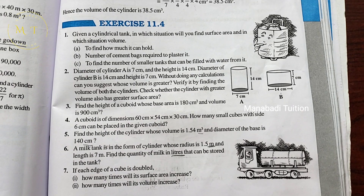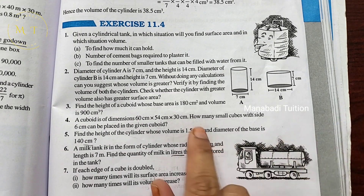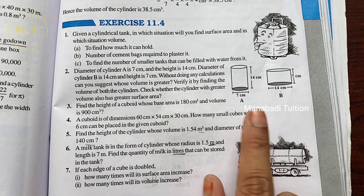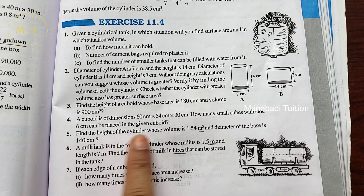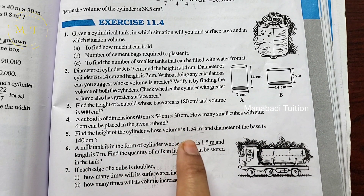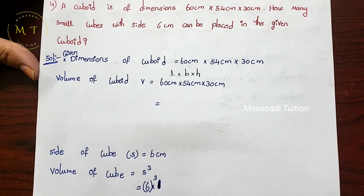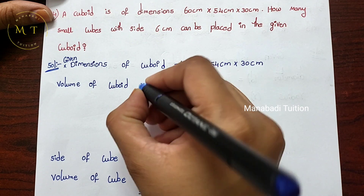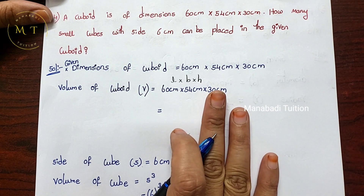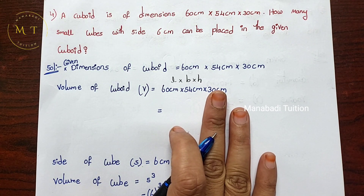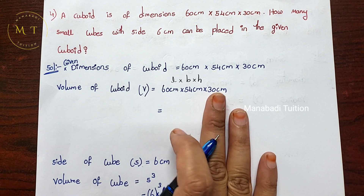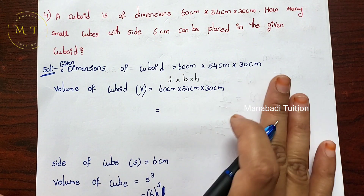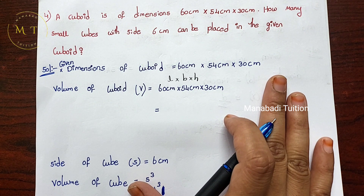We need to find the length, breadth, and height of the cuboid. To find how many small cubes can be placed inside, we will find the volume of the cuboid and the volume of the small cube. If we place small cubes inside the cuboid, we can determine how many fit.